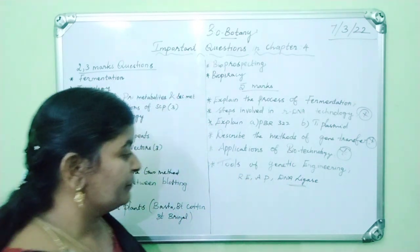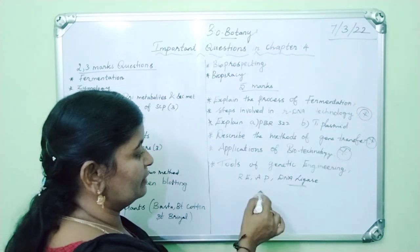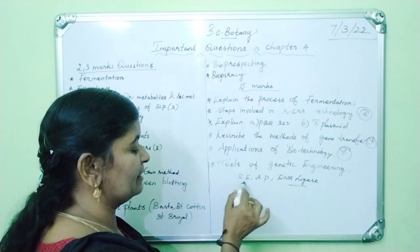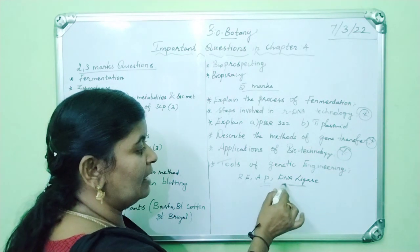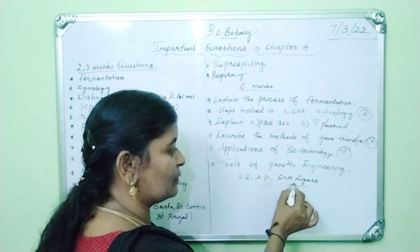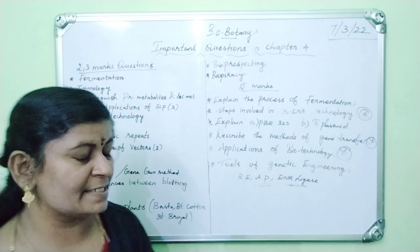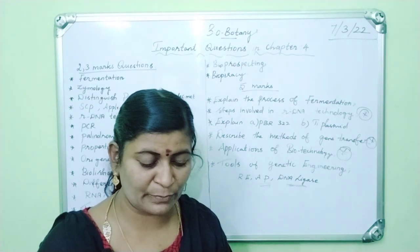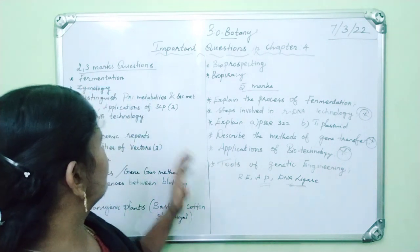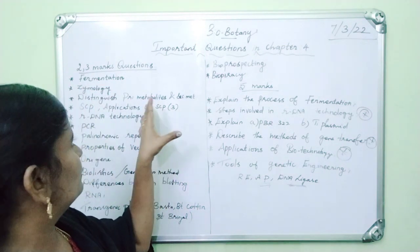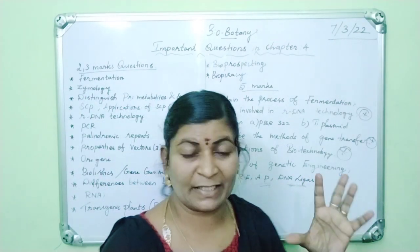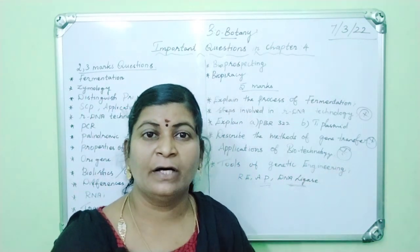Then tools of genetic engineering. Tools - restriction endonuclease, then alkaline phosphatase, DNA ligase. Like that, the question may come in this manner: what is the role of alkaline phosphatase in genetic engineering? Or what is the role of DNA ligase? Or what is the use of DNA ligase in genetic engineering? So like that the questions will come. These are the two marks, three mark, and five mark questions. I think it is very useful for you.